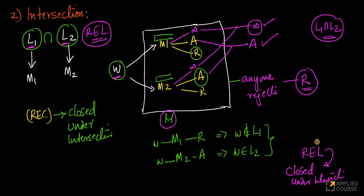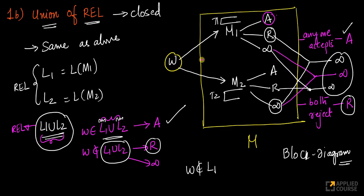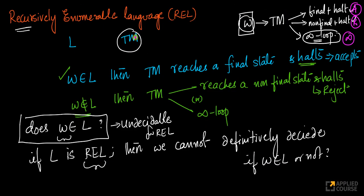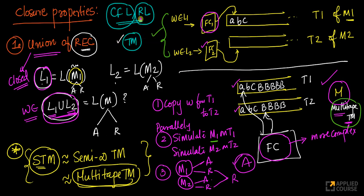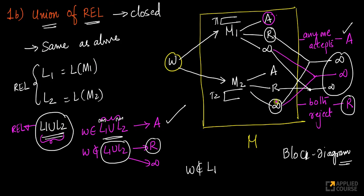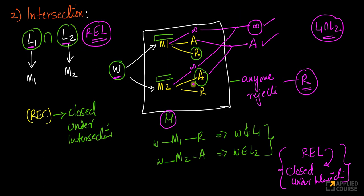Turing machine logics are easier than PDA logics as far as closure properties are concerned. It's much easier to construct Turing machines because of all the equivalences — semi-infinite tape, multi-tape — all equivalent. I can simulate a machine on one tape while simulating another machine on a different tape, thereby constructing these closure proofs for recursive and recursively enumerable languages much more easily.